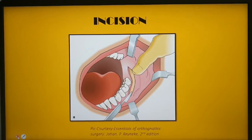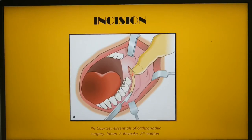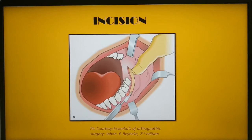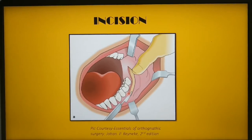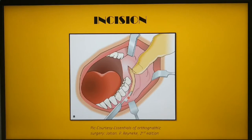The incision begins at the middle of the anterior ramus, extends inferiorly along the external oblique ridge towards the first molar, and then curves down to the buccal vestibule. Initially, only the mucosa is incised. The tissues must be retracted buccally before deepening the incision to prevent infiltration of the buccal fat pad into the surgical site. The incision is then deepened through the submucosa, muscle, and periosteum.